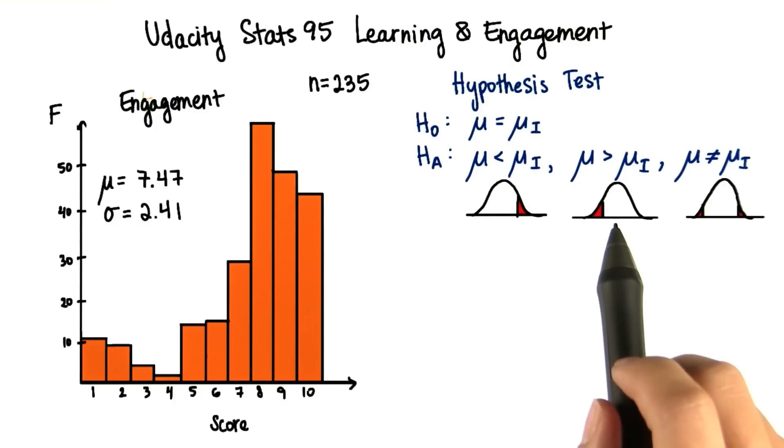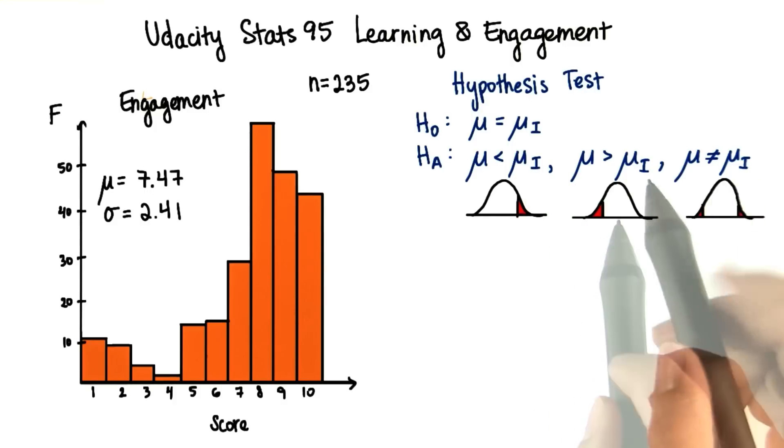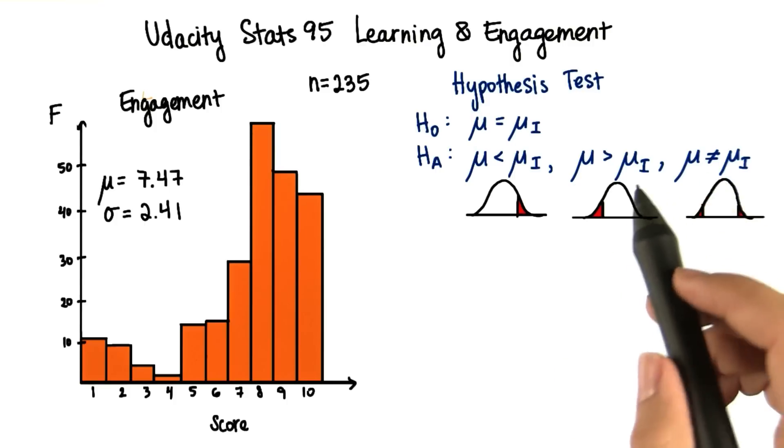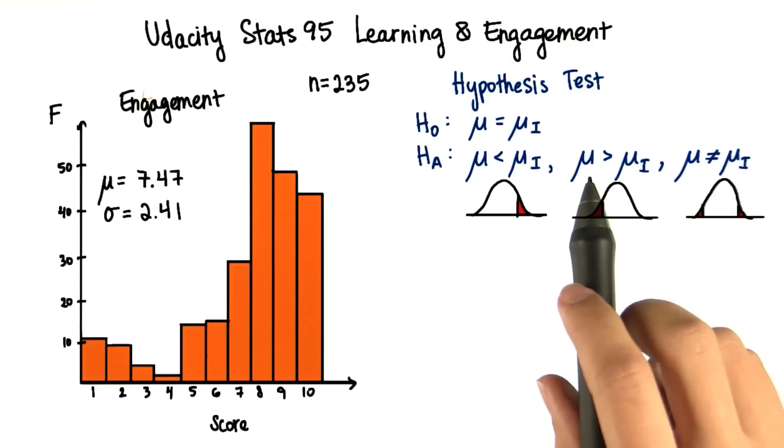Similarly, if our sample mean lies in the critical region below the current population parameter, the population parameter with the intervention will have a lower score than it does currently.